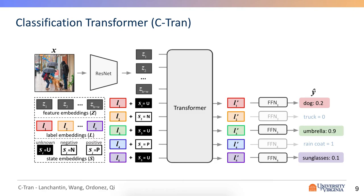So in this work, we propose a classification transformer, which is a general framework for multi-label image classification that leverages transformers to exploit the complex dependencies among visual features and labels.